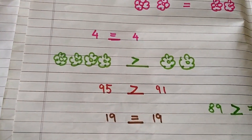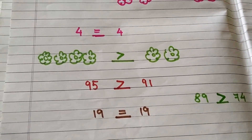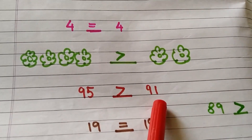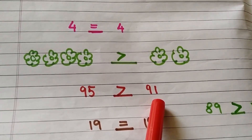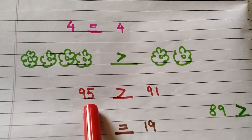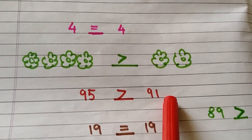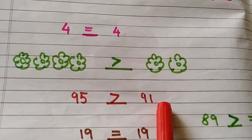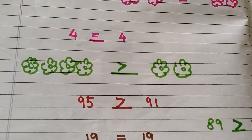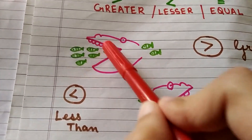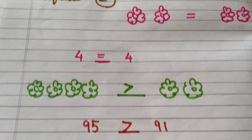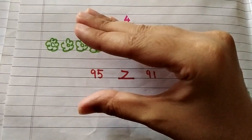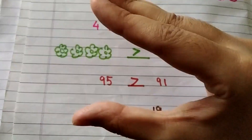Similarly children, when we talk about numbers, look at the first digit — it is nine over here and nine over here, so both first digits are same. Come to the second digit: five over here and one over here. In the number line we know five comes after one, so five is a bigger number and the crocodile's mouth is open on the side where the number of items are more. So as 95 is bigger than 91, the crocodile's mouth will be open on the bigger side.